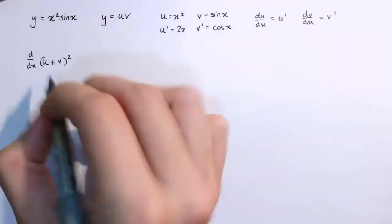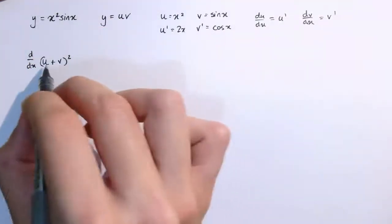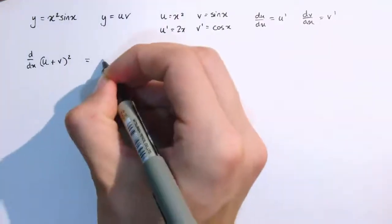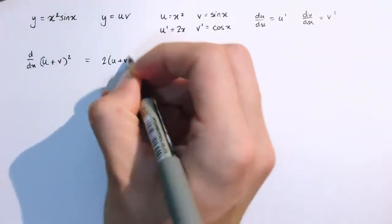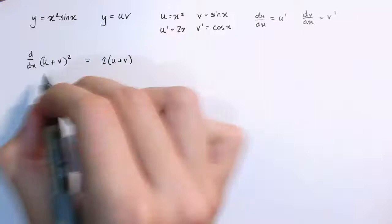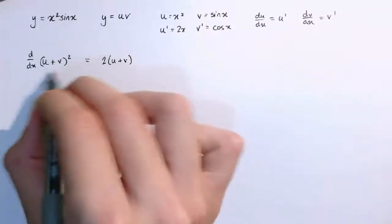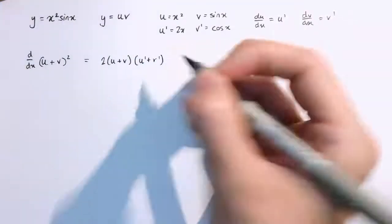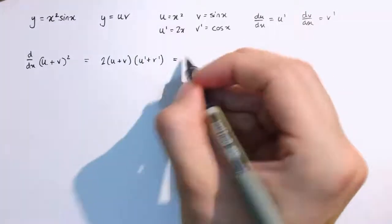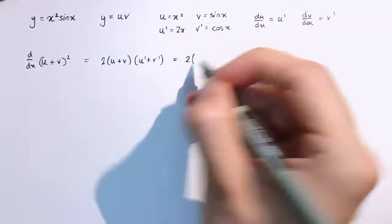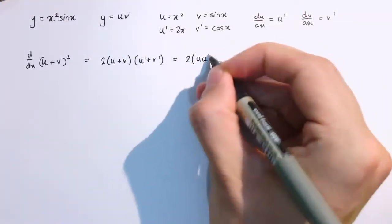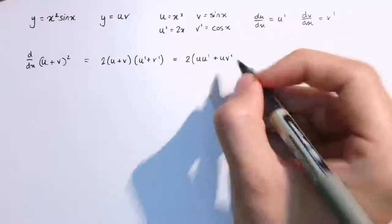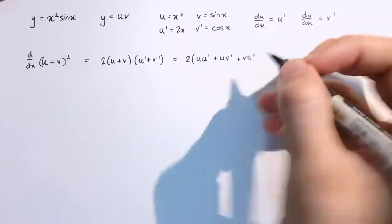I'm going to first differentiate it using the chain rule. This is like a function of u plus v all squared, so by the chain rule this is 2 times u plus v, multiplied by the derivative of the inside function, which is u dashed plus v dashed. Multiplying this out gives us 2 times u·u dashed plus u·v dashed plus v·u dashed.